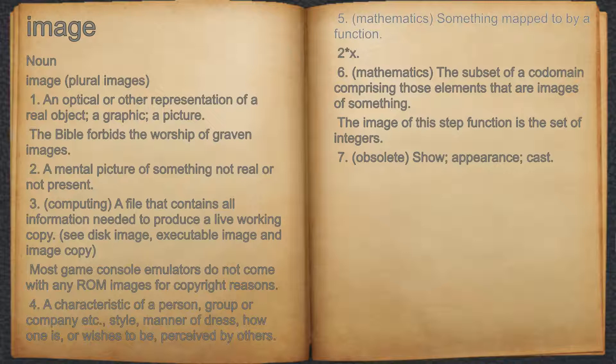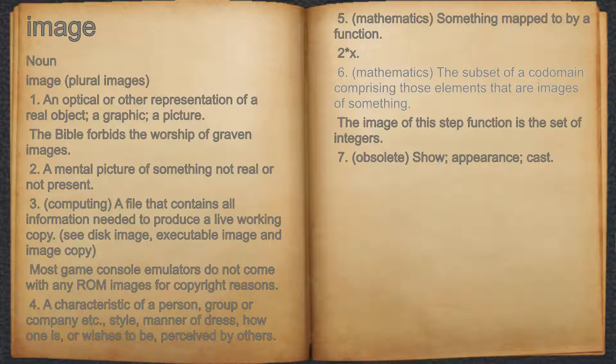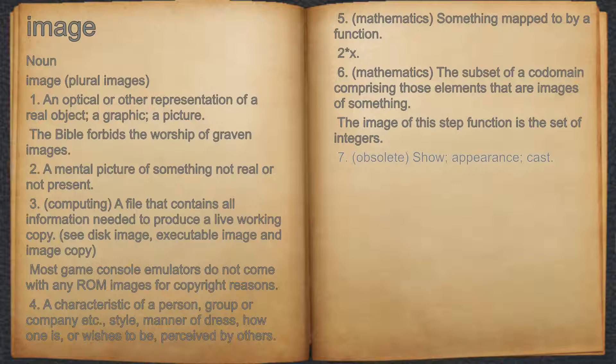5. Mathematics, something mapped to by a function. For example, the number 6 is the image of 3 under f, defined as f(x) = 2 * x. 6. Mathematics, the subset of a domain comprising those elements that are images of something. For example, the image of this step function is the set of integers.